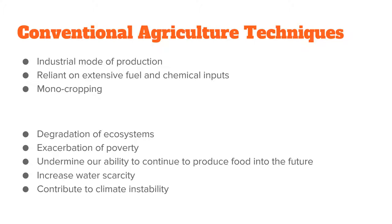Conventional agriculture — or industrial agriculture — basically evolved out of the Second World War, so we're talking not even a hundred years that we've been farming this way. It is much more reliant on fuel inputs and chemical inputs rather than working with the ecosystem's natural cycle. Instead, we've inserted ourselves into a straight line from A to B without really thinking about that recycling aspect.